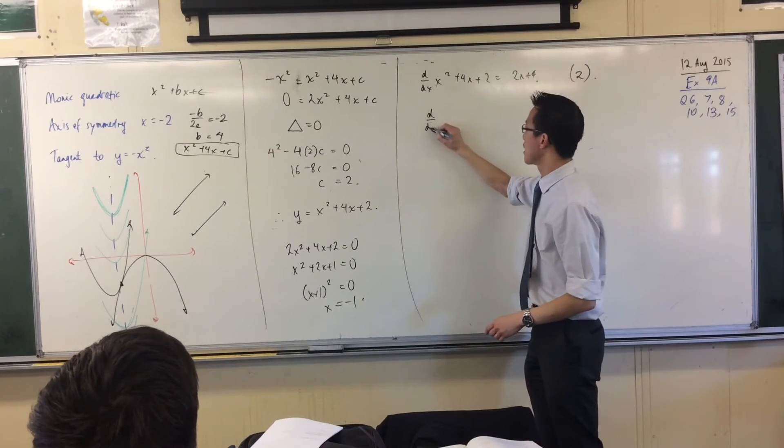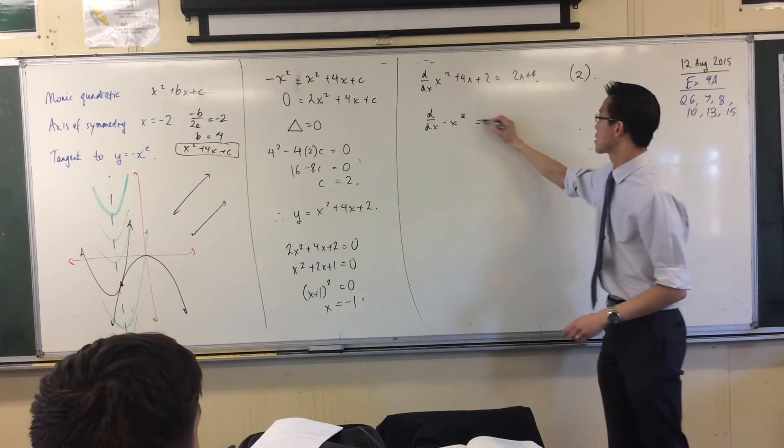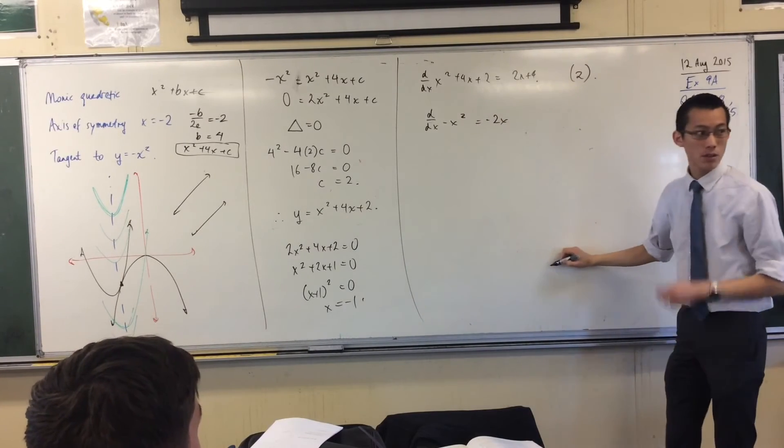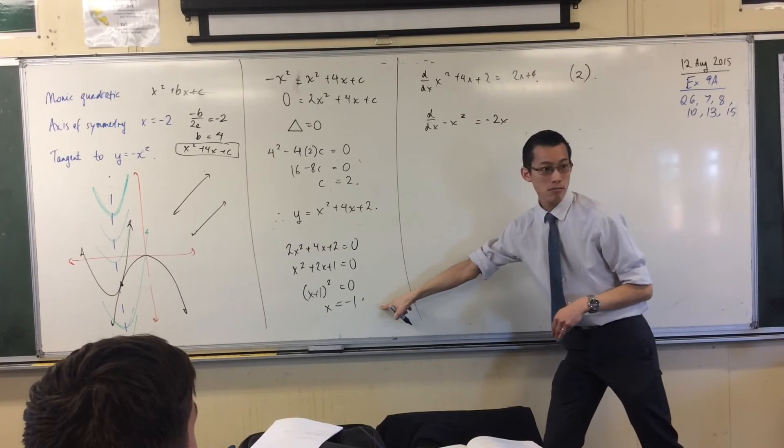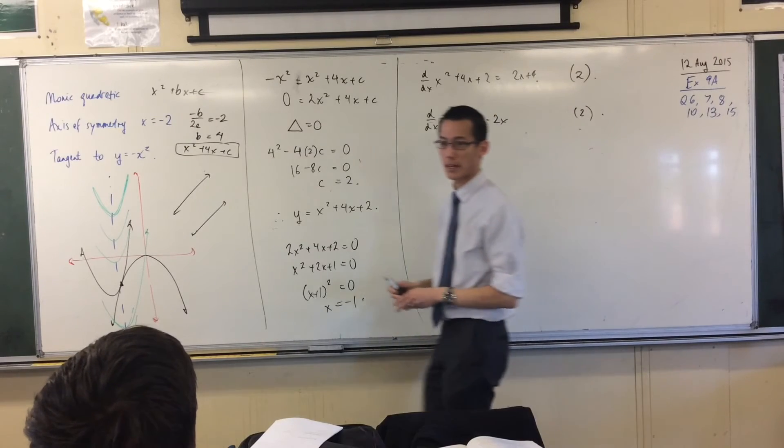When I think about the derivative of the other graph, which is negative minus x squared, that's minus 2x. So at x equals negative 1, which is the point of intersection, I put that in and sure enough, I get 2. It's the same gradient.